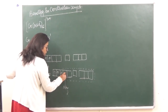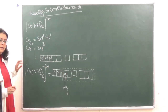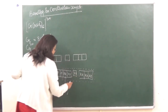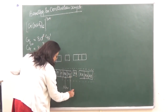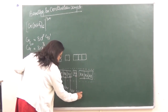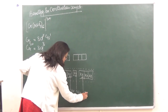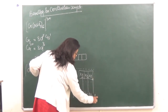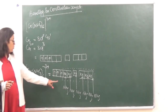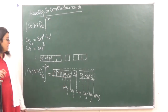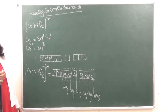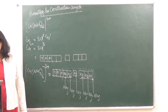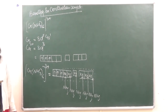Ammonia has a lone pair of electrons which it donates into the empty hybrid orbitals of the metal, forming a coordinate bond. The arrows pointing upward show that electrons are being provided from ammonia into the empty d orbitals.